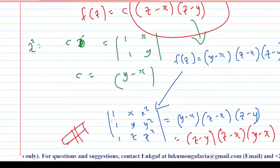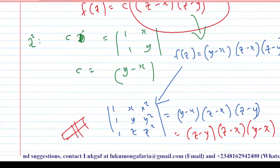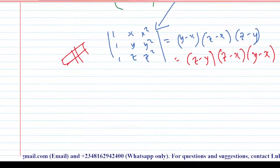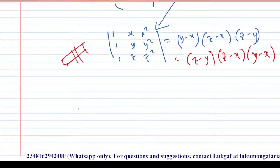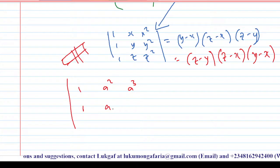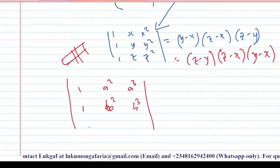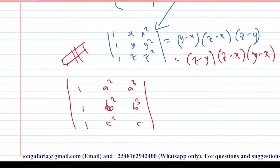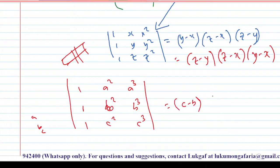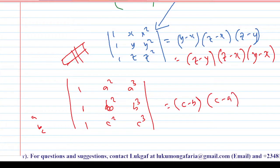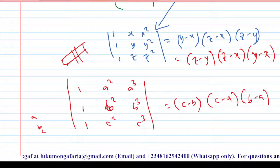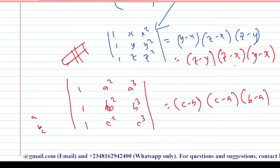And this is the proof of Vandermonde determinants. It is very simple. Anytime you have your matrix with the terms of a geometric progression in each of the rows, you don't need to stress yourself. For example, if you have a 3×3 Vandermonde with entries 1, a, a squared; 1, b, b squared; 1, c, c squared, then the determinant is (c minus b)(c minus a)(b minus a).